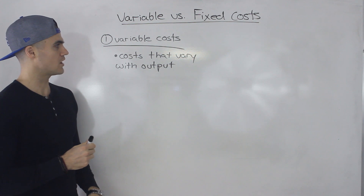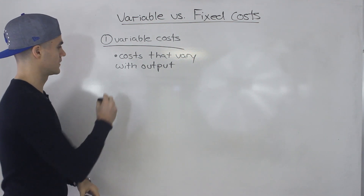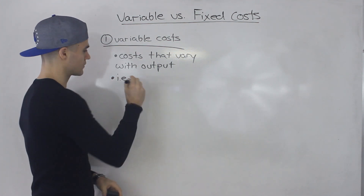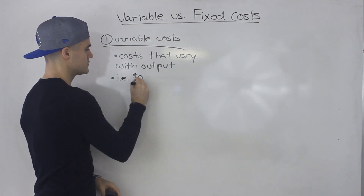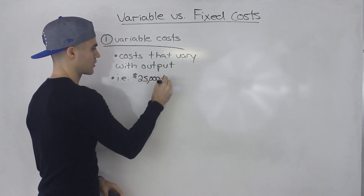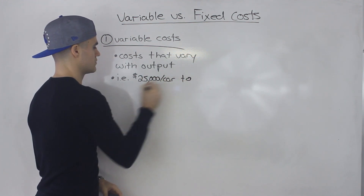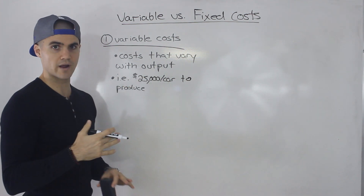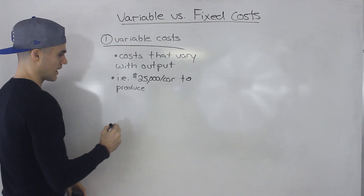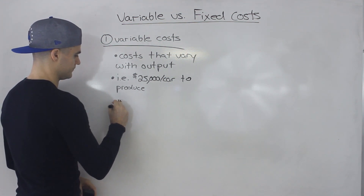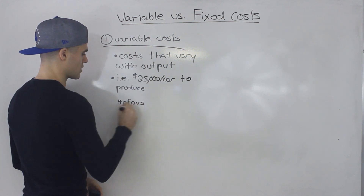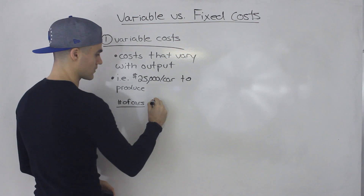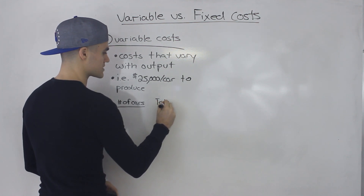The first type of cost I want to go over is variable costs. Variable costs are basically costs that vary with output. For example, let's say you have a car factory and it costs you $25,000 per car to produce — that includes all of the direct materials and direct labor. We can make a chart depending on how many cars we produce and what our total cost is going to be.